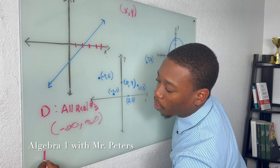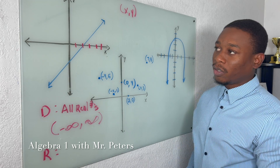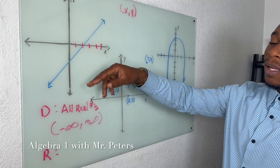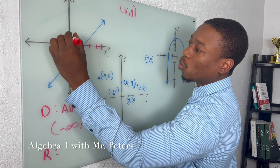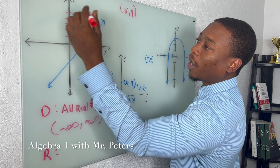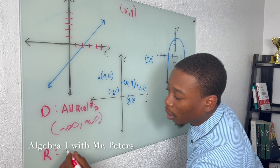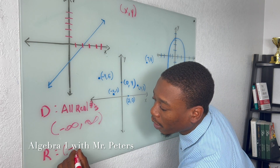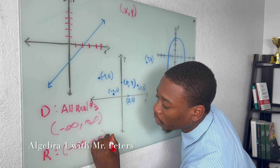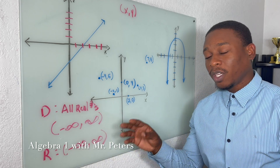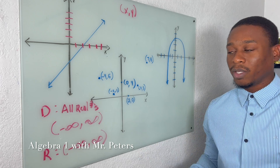Now when we go down to range, it's going to be very similar — talking about the Y axis. The same thing applies: when Y is 1, 2, 3, 4, 5, and so on, it's going to be included. So our range would be negative infinity to infinity. And just remember, infinity always has parentheses around it.